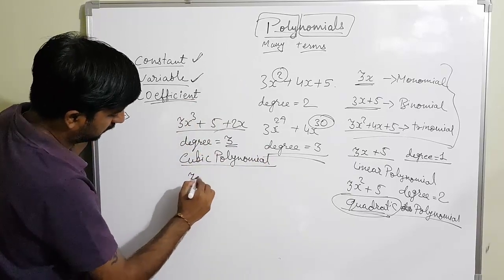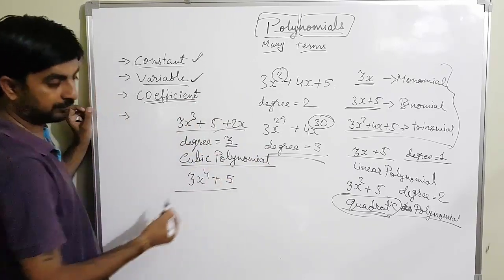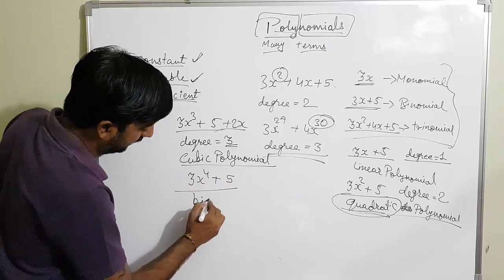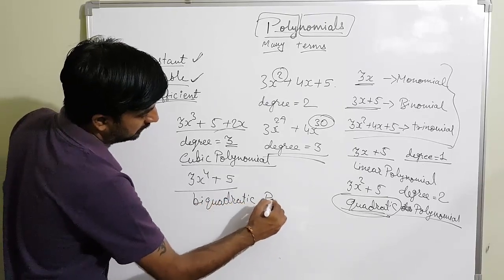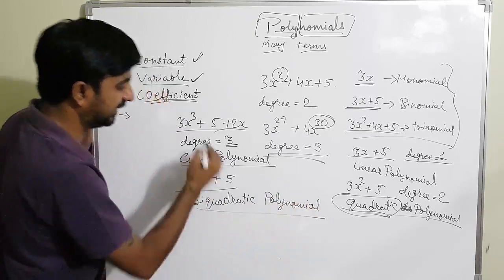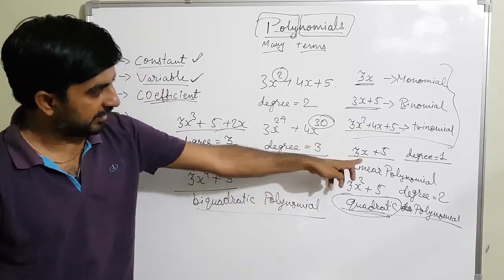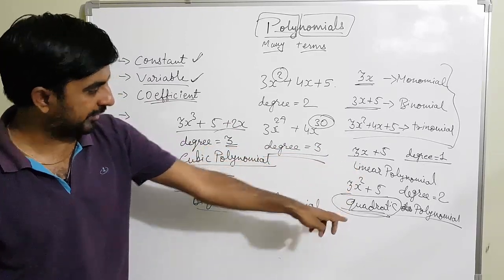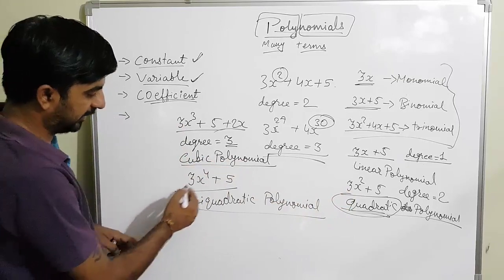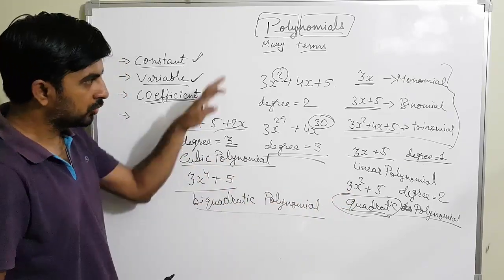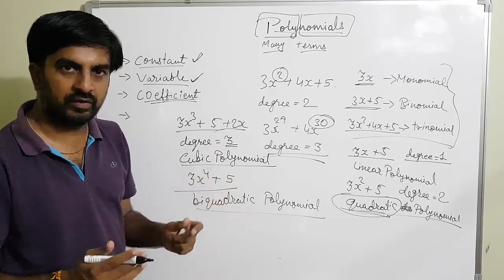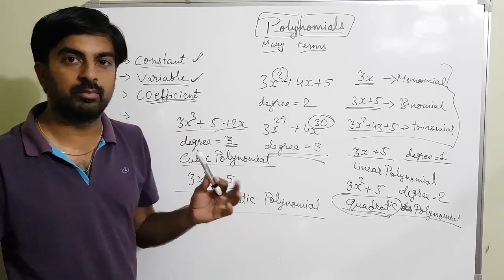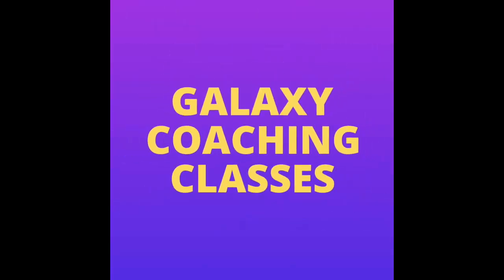If the highest degree is 4 — for example 3x raised to 4 plus 5 — then that is called a biquadratic polynomial. So to summarize: degree 1 is linear, degree 2 is quadratic, degree 3 is cubic, degree 4 is biquadratic. These are the basic things you need to keep in mind. Thank you so much for watching. If you like it, please subscribe to my channel so I can bring more such videos.